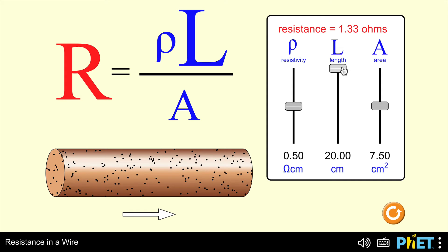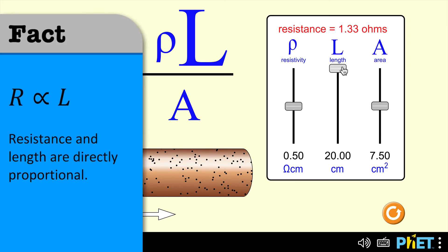What that means is when we're doubling one quantity and the other one doubles, these two quantities are directly proportional. So, resistance of the wire and the length of the wire are directly proportional.